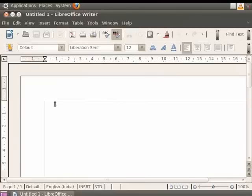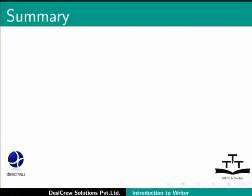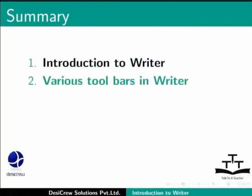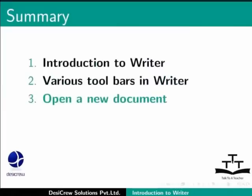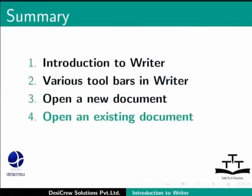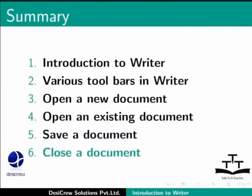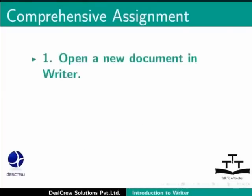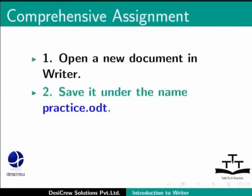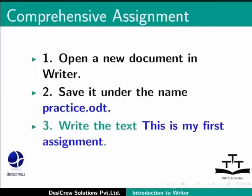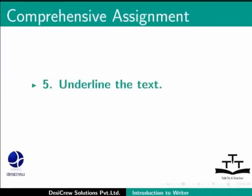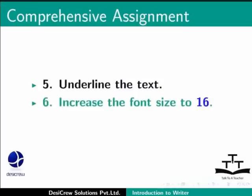This brings us to the end of the spoken tutorial on LibreOffice Writer. To summarize, we learnt about the Introduction to Writer, various toolbars in Writer, how to open a new document and an existing document, how to save a document, and how to close a document. Comprehensive assignment: Open a new document in Writer, save it under the name Practice.odt, write the text This is my first assignment, save the file, underline the text, increase the font size to 16, and close the file.